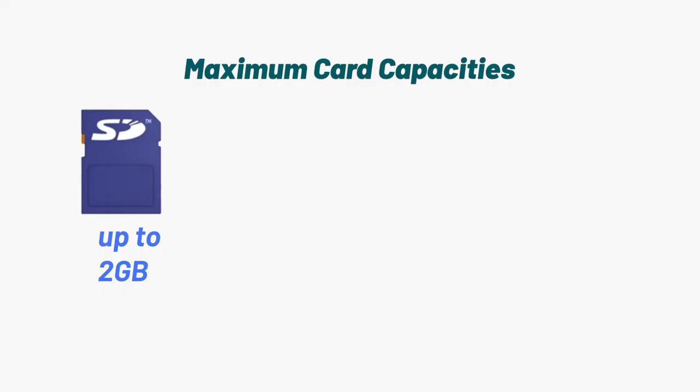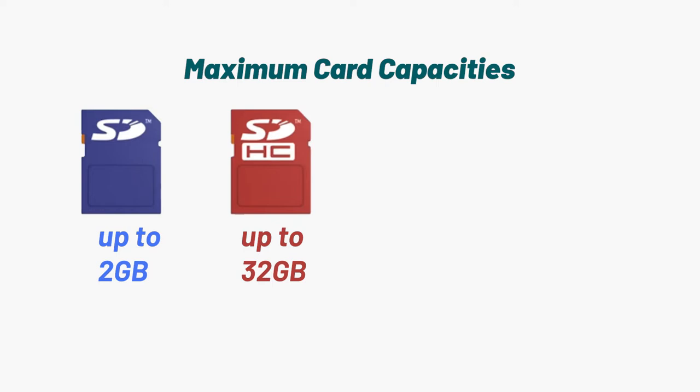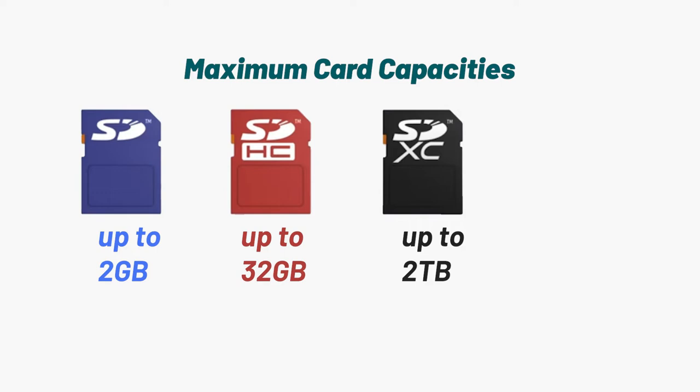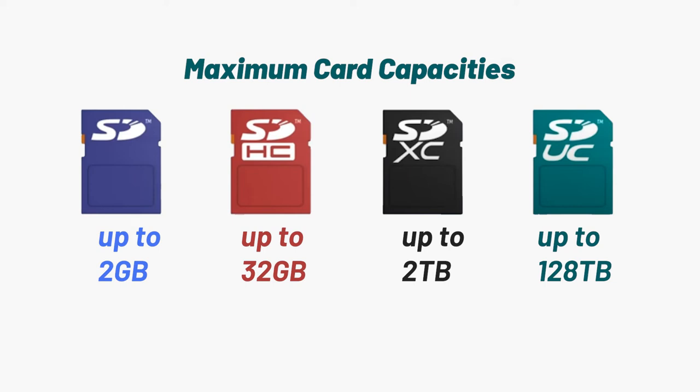The original SD cards were limited to two gigabytes because of the file format. As the file formats have changed over the years, the maximum capacity of the cards has also increased. From two gigabytes on the original SD card, we moved up to a maximum of 32 gigabytes on the SDHC cards, then up to two terabytes on the SDXC extended capacity cards, and beyond that, the SDUC ultra capacity cards hold an amazing 128 terabytes per card.